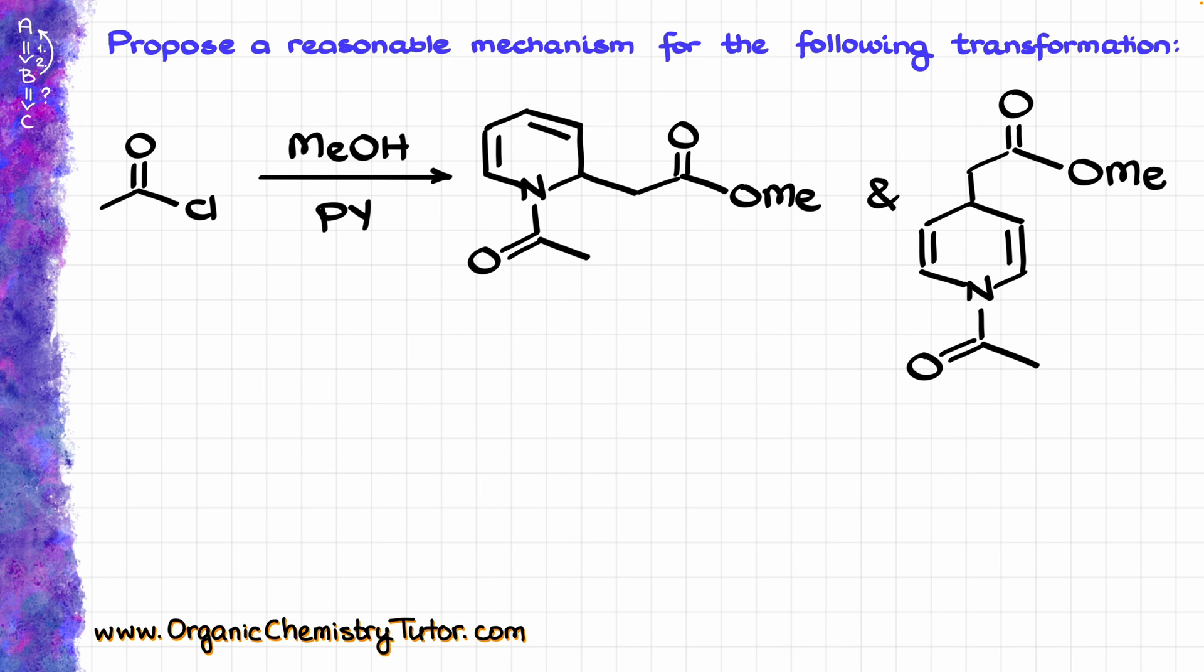In this video, I want to look at this transformation where we start by reacting acid chloride with methanol in the presence of pyridine. But instead of a simple ester that we would normally expect for a reaction like that, or at least that's what we teach in an undergraduate organic chemistry curriculum, we get a much more complicated species with the pyridine moiety encapsulated as part of this molecule.